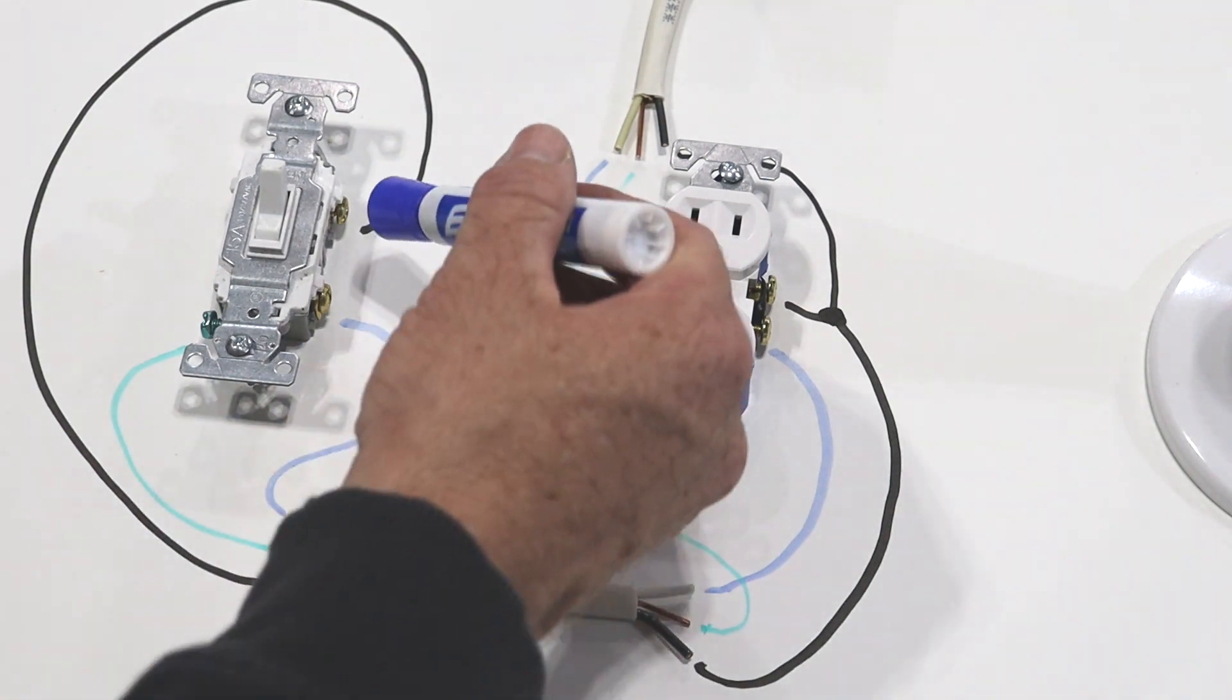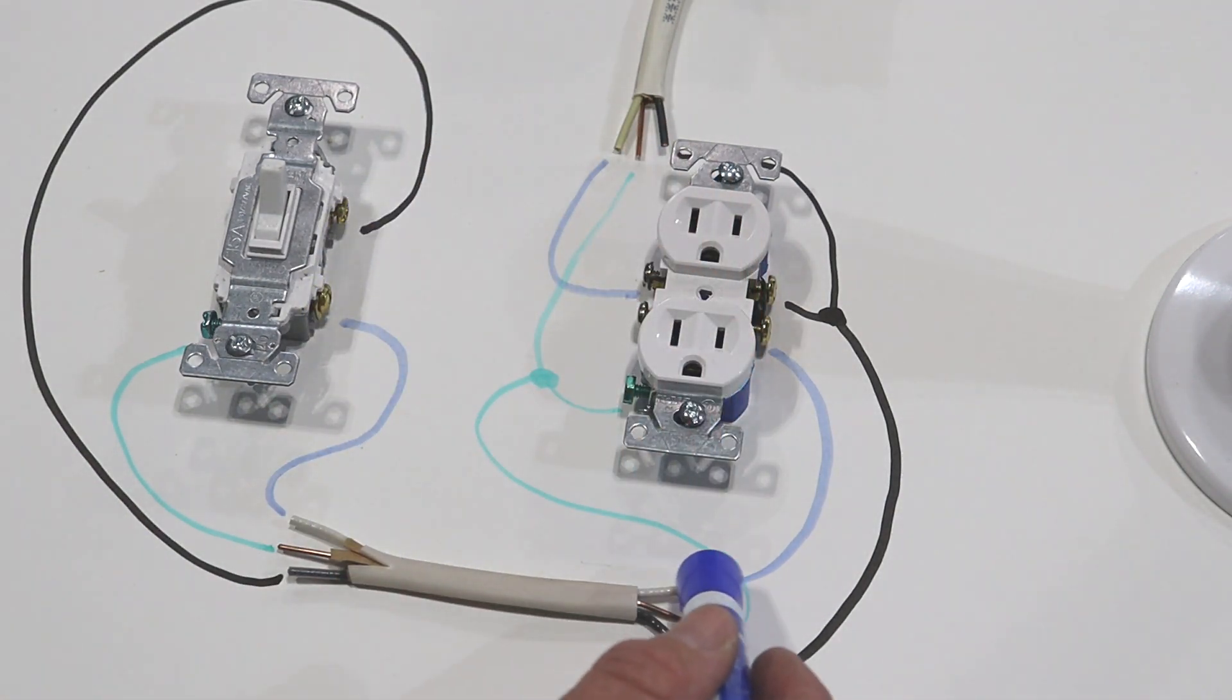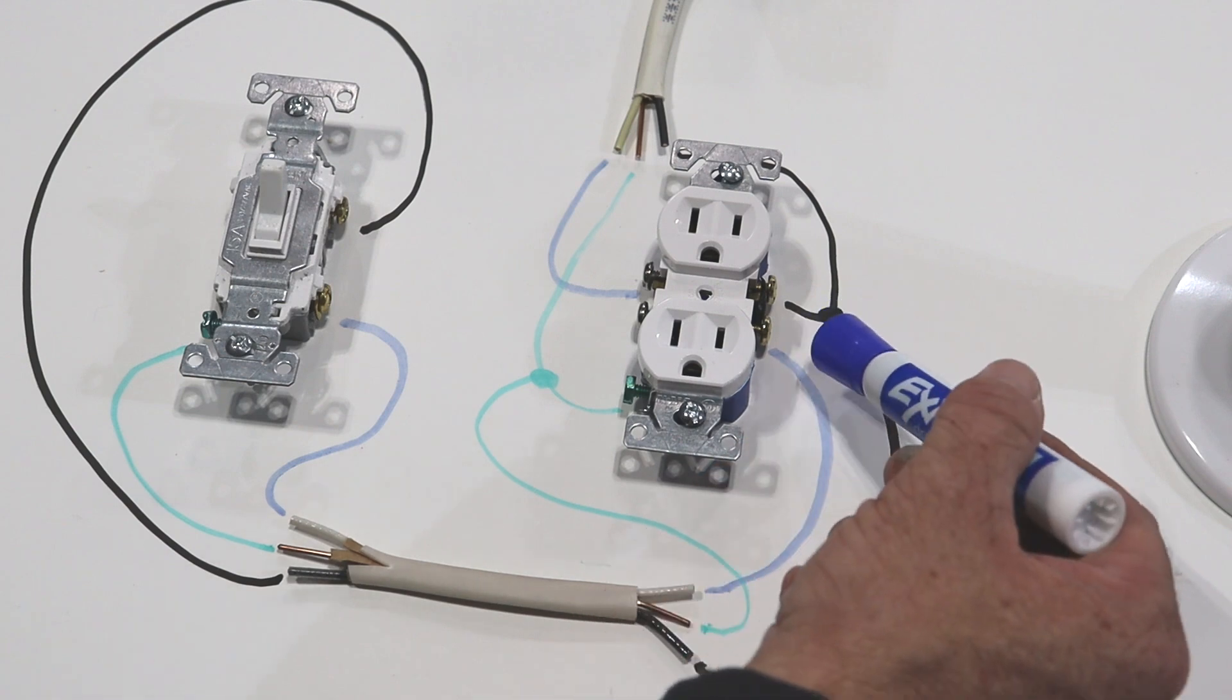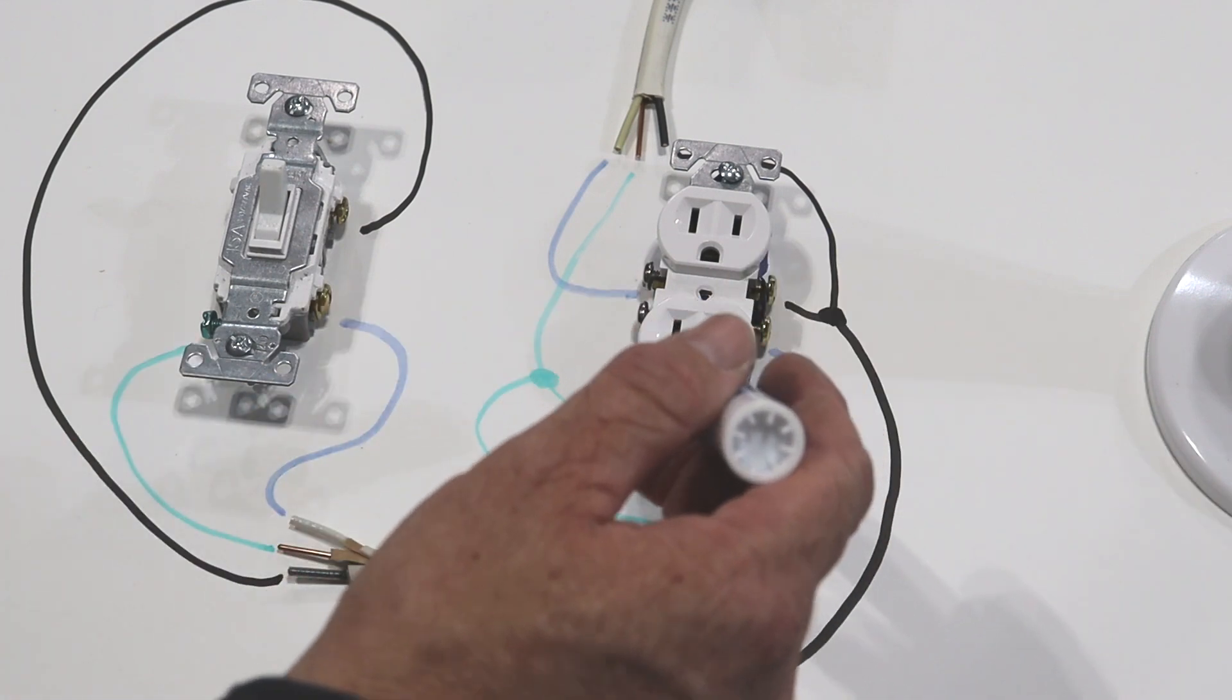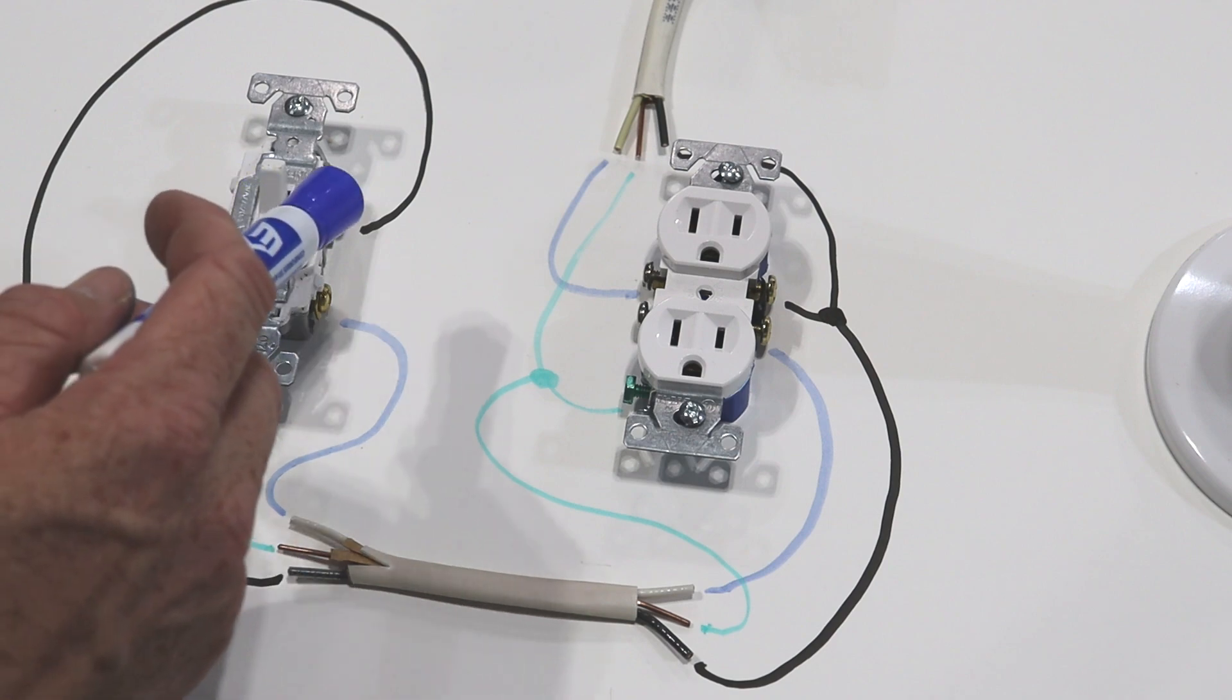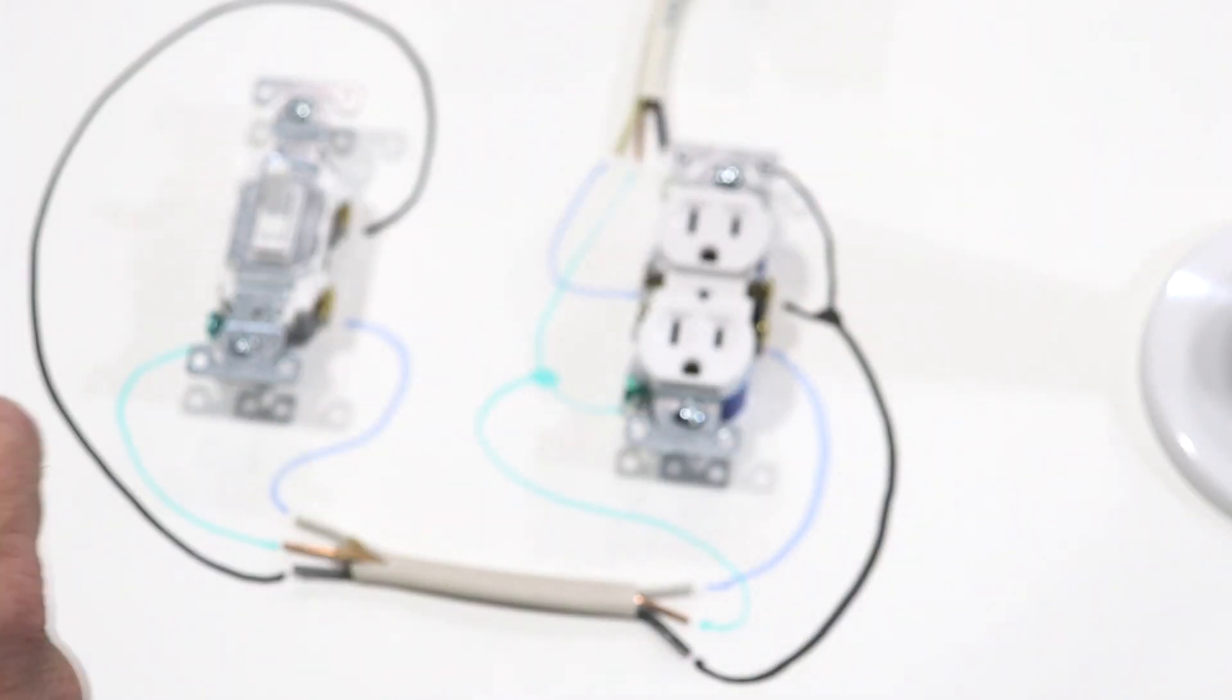Brentley turns the switch on, makes contact between these two screws. Now this white wire is now hot. And now we've just made this screw over here hot. So now essentially with this light switch being on, both of these outlets are now hot.